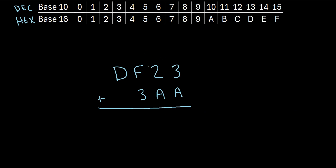Let's try one more example. Let's say we have DF23 plus 3AA. We'll start in the first column: 3 plus A. A is the same as 10. So we really have 3 plus 10, which is 13. And in the hexadecimal system, D represents 13. So we'll write a D right here. Next, we get 2 plus A. A is 10. So 2 plus 10 is 12. In the hexadecimal system, C represents 12. So we'll write a C.